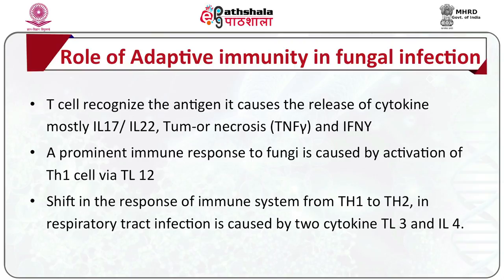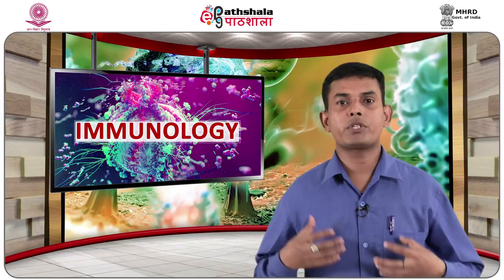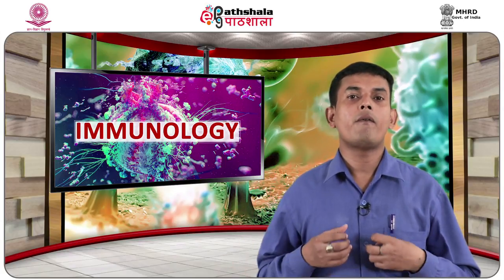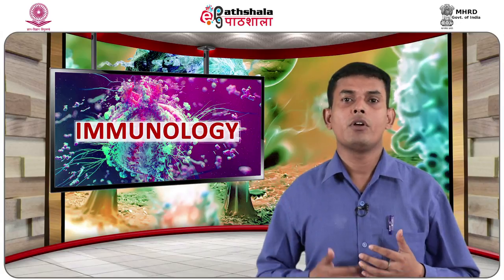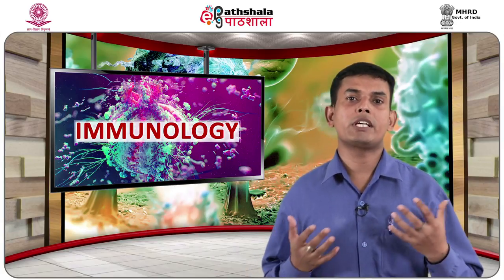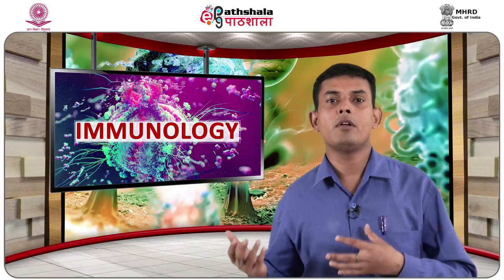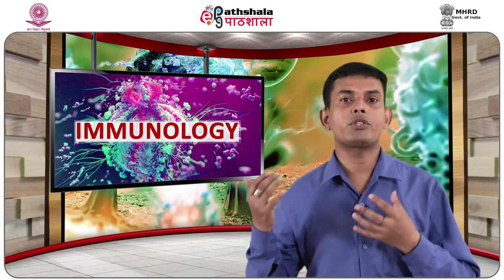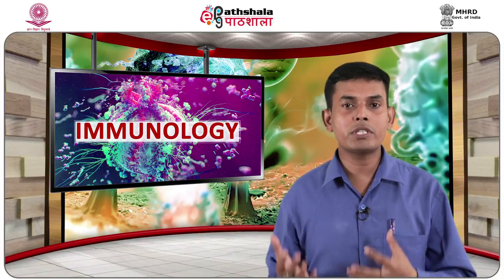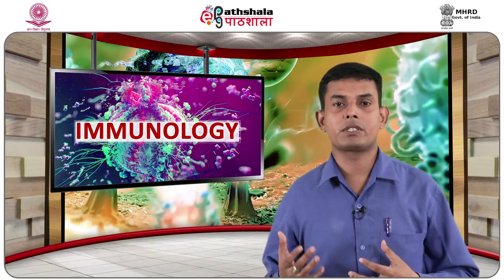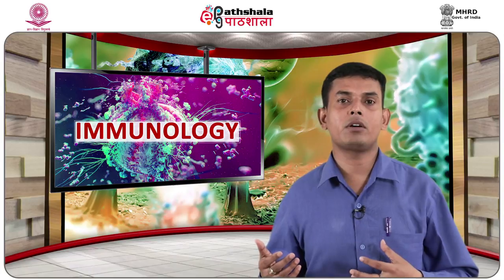A prominent immune response to fungi is caused by activation of TH1 cells via interleukin-12. Production of interferon-gamma and opsonizing antibody based on activity of TH1 cells promotes phagocytosis at the site of infection. Fungal infection by Aspergillus fumigatus induces a strong TH1 response, as proved by studying human peripheral blood mononuclear cells and a system consisting of monocyte-derived macrophages with lymphocytes, as predicted by Chain et al. in 2010.